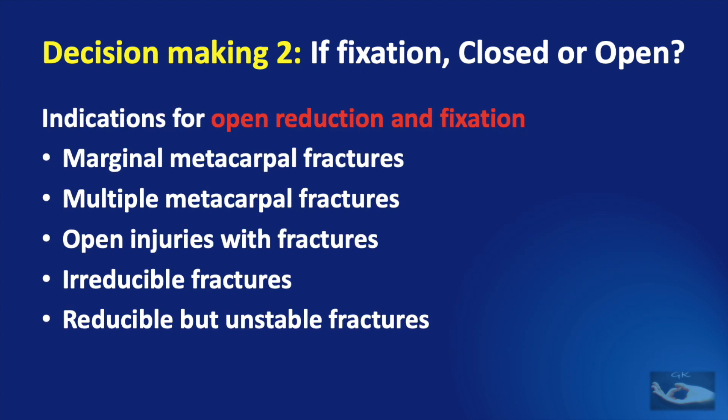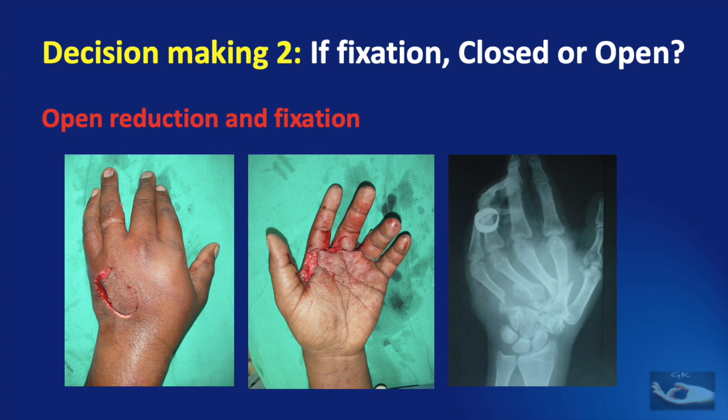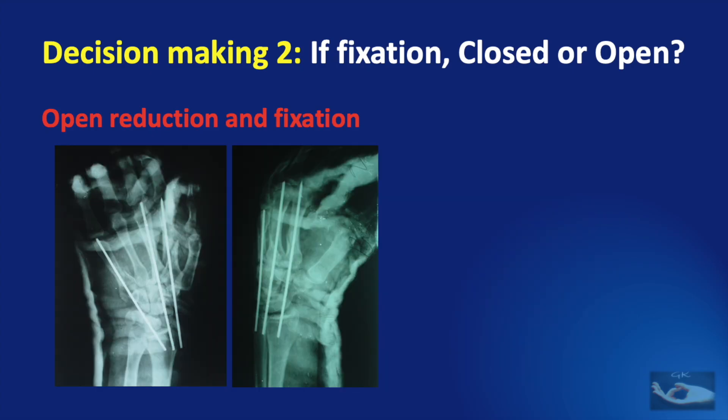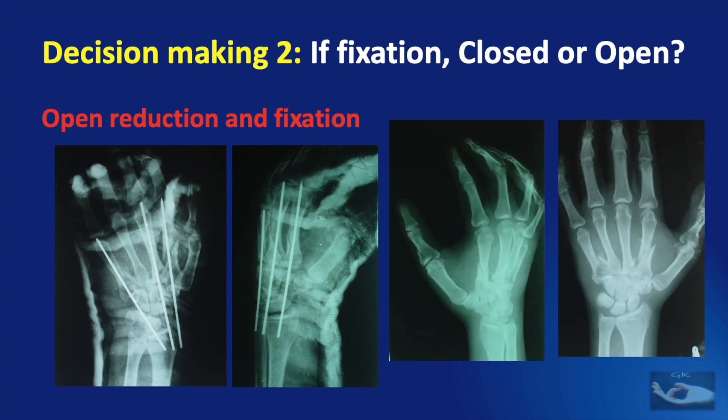For some fractures, we will have to do open reduction and fixation. Apart from the indications mentioned earlier, open injuries with fractures and irreducible fractures must be subjected to open reduction and fixation. This clinical example shows an open wound with fractured dislocations of the base of the 2nd, 3rd, 4th and 5th metacarpals which have been fixed with K-wires. The results can be noted.